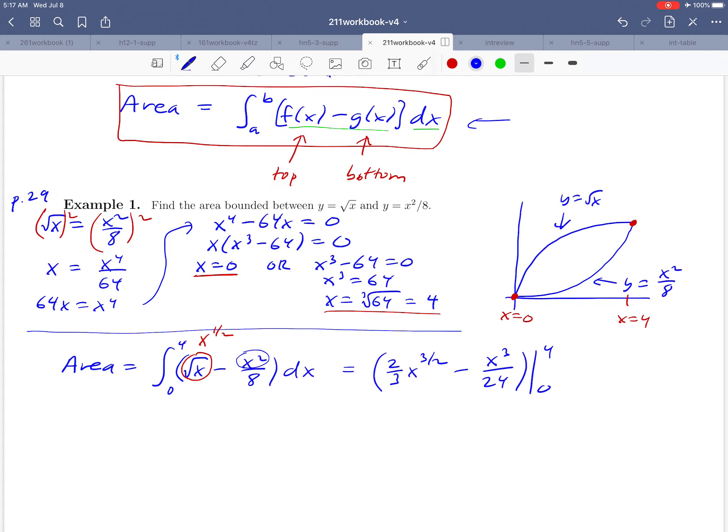There's our antiderivative, and we want to just evaluate it between 4 and 0. So let's see. If we plug in our 4 for the upper limit, we're going to get 2 thirds times 4 to the 3 halves minus 4 cubed over 24. And then if you plug in 0 for the lower limit, you're just going to get 0 for both terms.